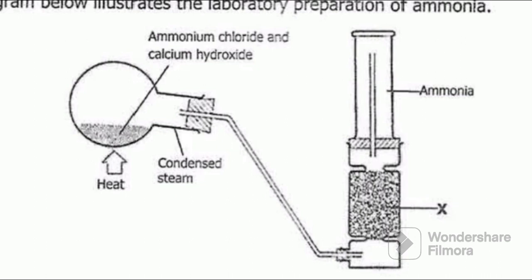In the round-bottomed flask we have ammonium chloride and calcium hydroxide. This mixture in the round-bottomed flask is being heated — you can see heat is being applied. We also have structure X, and above that, the ammonia which we are preparing.